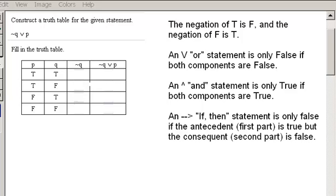In order to complete any truth table successfully, we need to know our four basic rules. The first rule is that the negation of a true statement is false and the negation of a false statement is true.